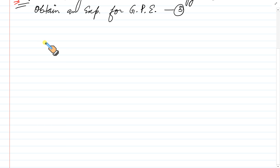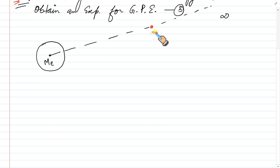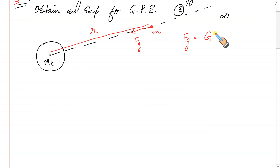ہمارے پاس Earth ہے، اس کا mass Me ہے۔ Infinity سے ہم کوئی بھی mass لا رہے ہیں — small m — اور یہ distance x یا r مان لیتے ہیں۔ Distance r پر gravitational force لگے گی۔ Gravitational force کا magnitude ہے: G·Me·m / r²۔